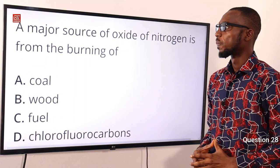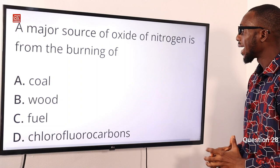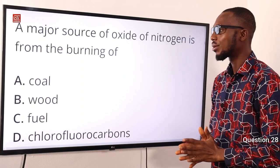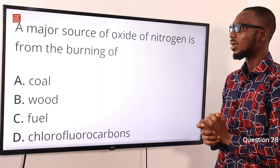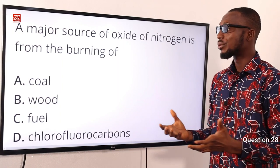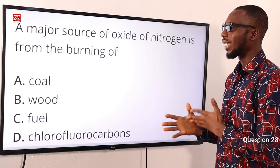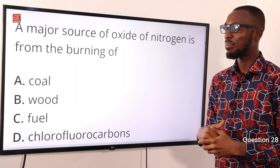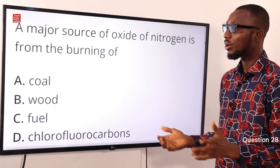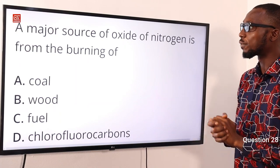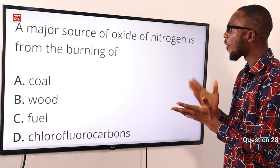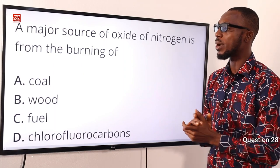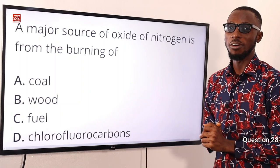Question 28: A major source of oxides of nitrogen is from the burning of what? The oxides of nitrogen are produced during the combustion of fuel at high temperature. So the correct option is option C — a major source of oxides of nitrogen is from the burning of fuel.